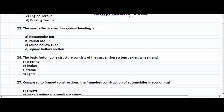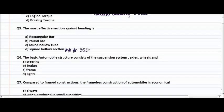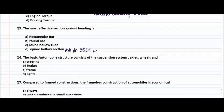Question number five: the most effective section against bending is — rectangular bars, round bar, round hollow tube, or square hollow section? Always remember this is a very important question. It appears in SSC, other state RTO exams, and even in interviews. The right answer is square hollow section, which is the most effective against bending.